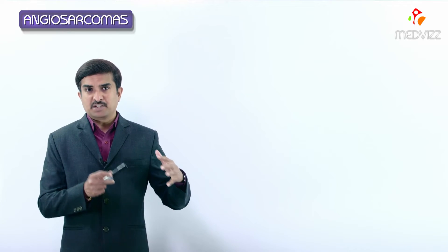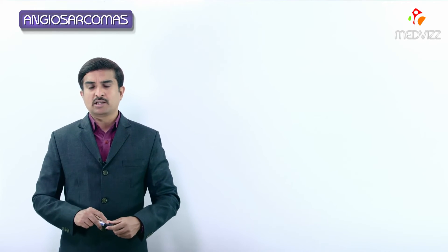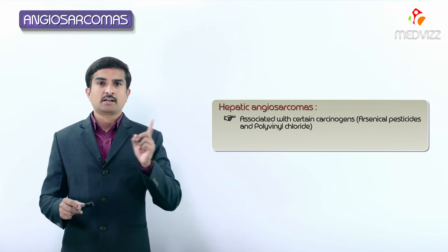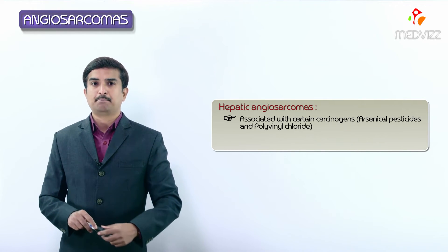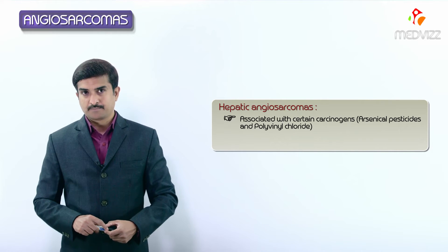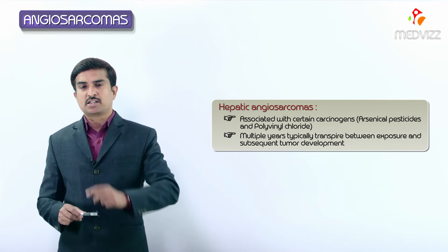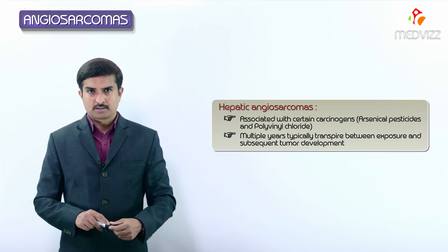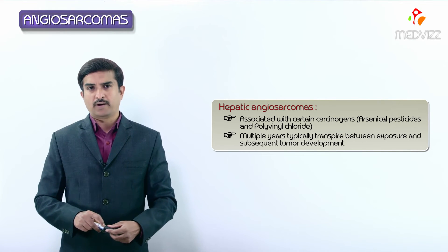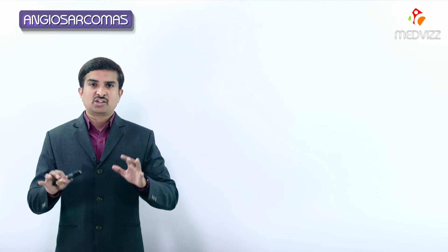A specific type called hepatic angiosarcoma is associated with certain carcinogens including arsenical pesticides and polyvinyl chloride - one of the best known examples of human chemical carcinogens. Multiple years typically transpire between the exposure to these chemicals and subsequent tumor development. If asked the most common cause of hepatic angiosarcoma, the answer should be vinyl chloride or arsenic - especially arsenic is frequently asked in exams.